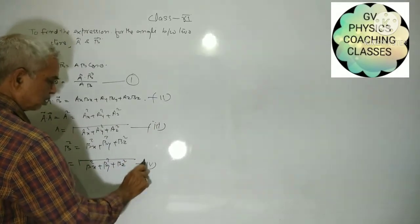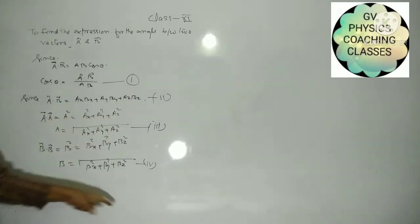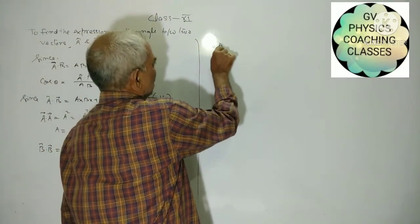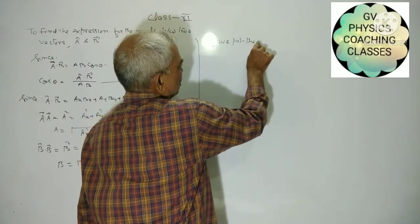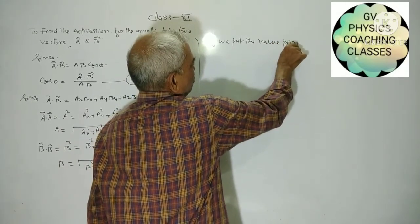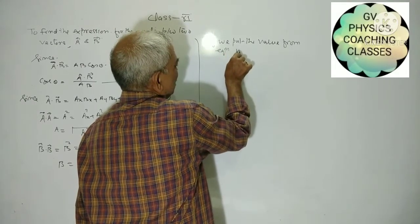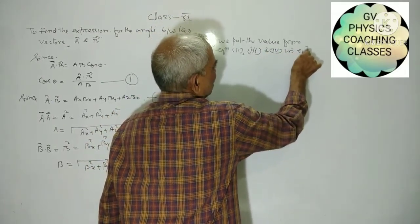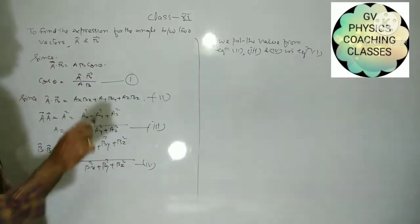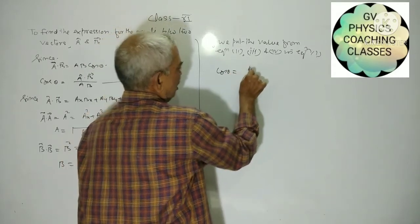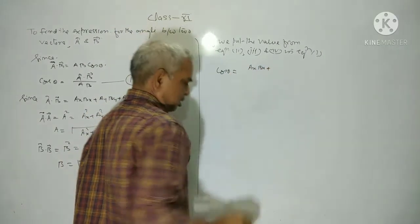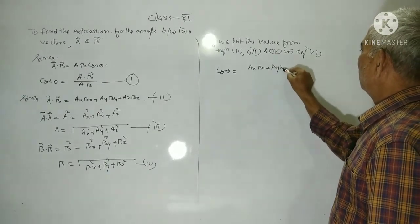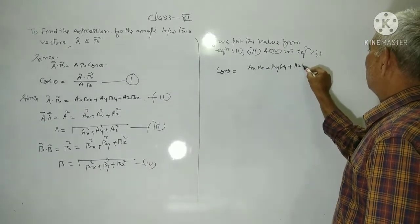We put values from the 2nd, 3rd and 4th equations into equation 1st. Then cosθ equals AxBx plus AyBy plus AzBz.